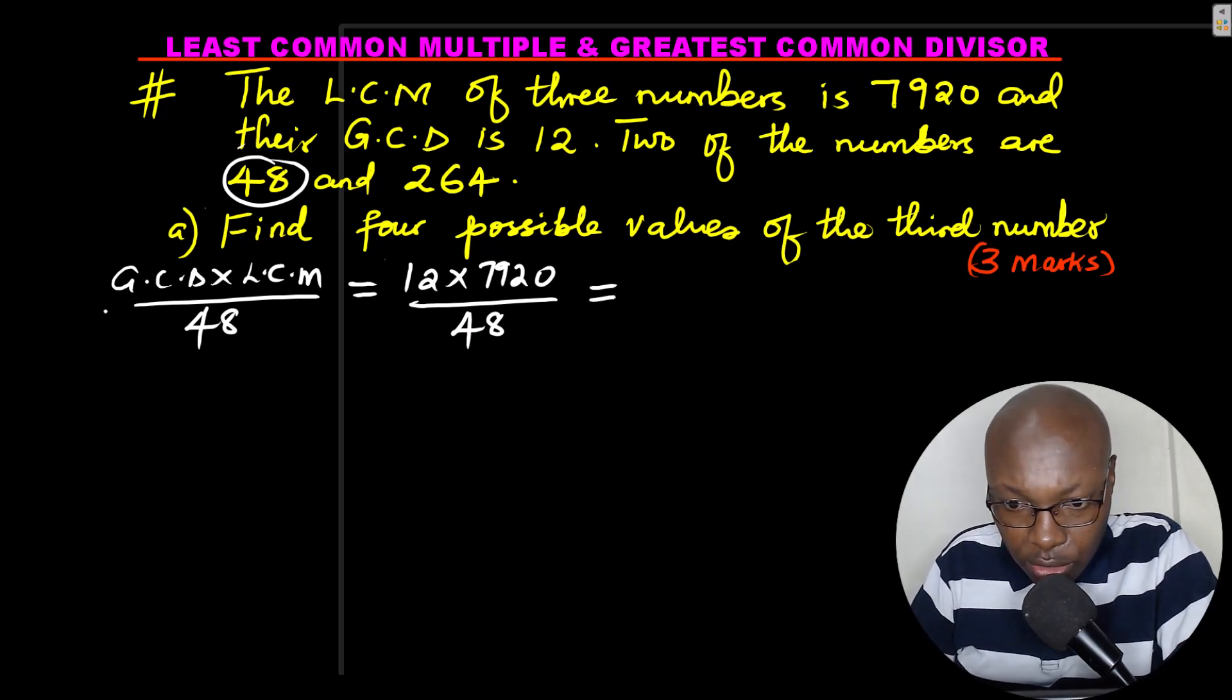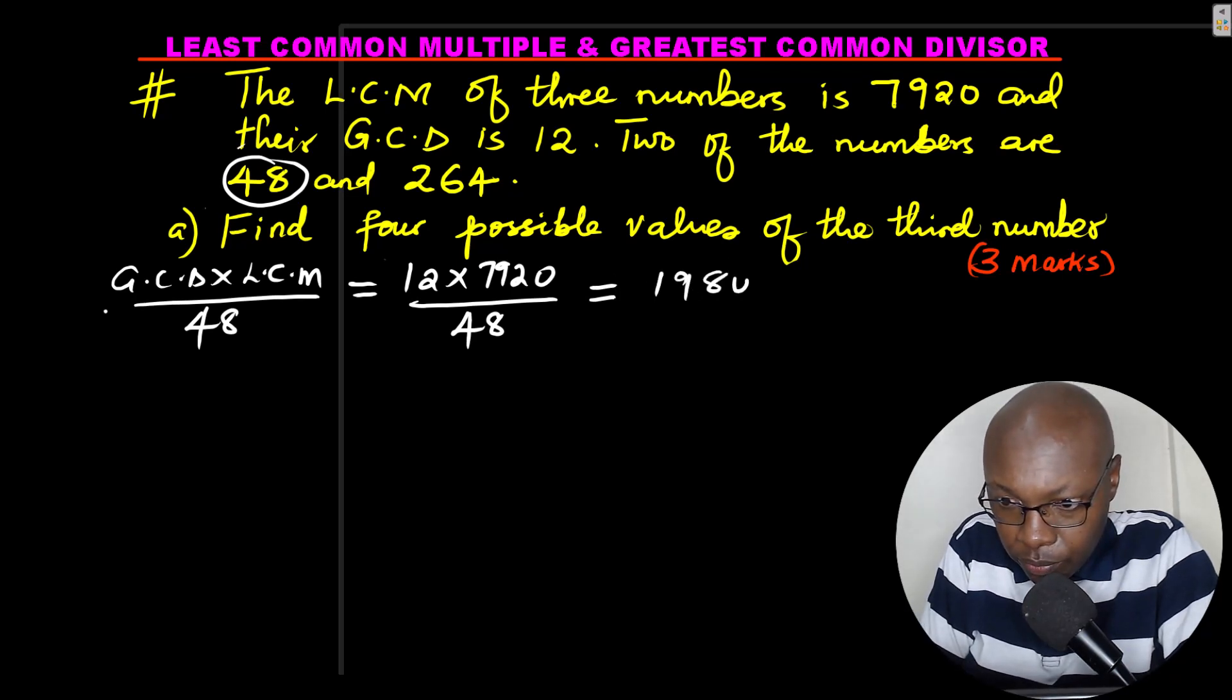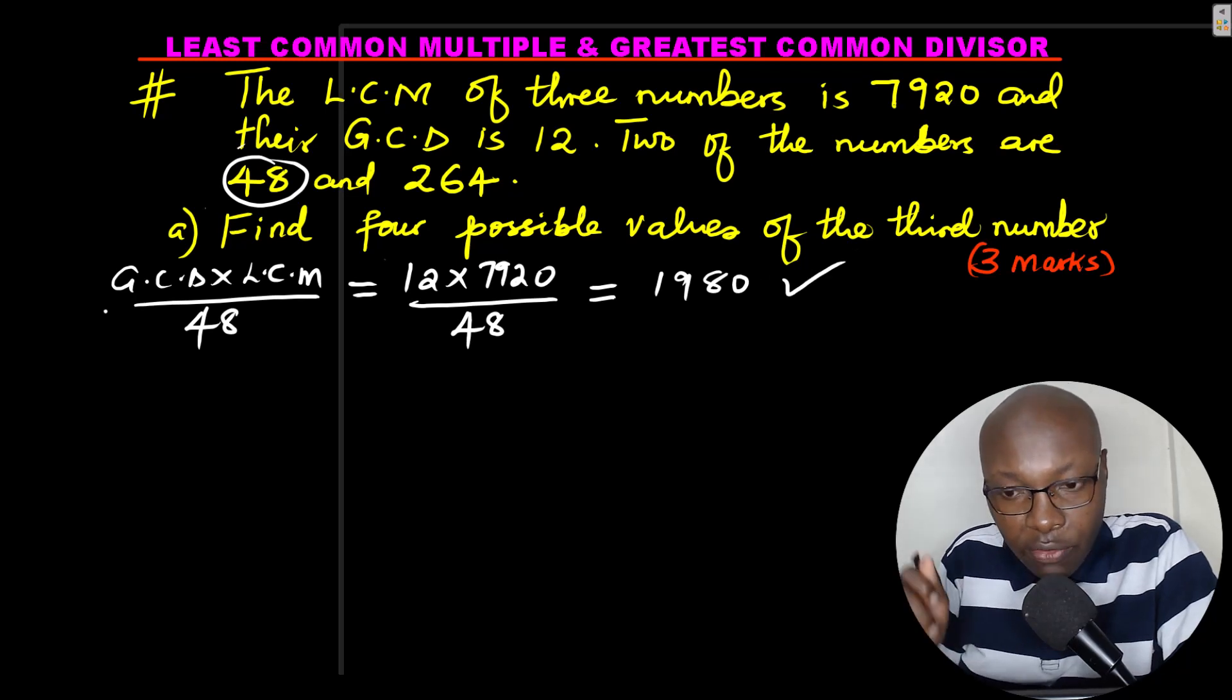Working this out using a calculator, 12 times 7920, divided by 48, you get 1980. So 1980 is the first possible value of the third number, and you can try this.